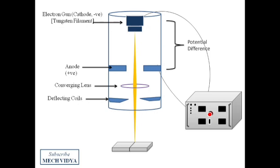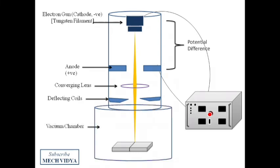Finally, the beam falls on the workpiece. The workpiece is actually kept inside a vacuum chamber. Vacuum is maintained so that the electron beam does not interact with air particles. If the beam interacts with air particles, the velocity of the electron beam will drop and a portion of the ray will get deviated.